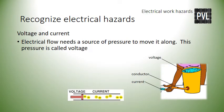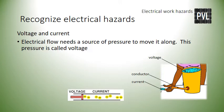Voltage and current: electrical flow needs a source of pressure to move it along — this pressure is called voltage. Think of voltage as a bucket full of water. Electrical flow, on the other hand, is the rate of flow of electric charge, commonly called current. Think of current as the stream of water escaping from the bucket through a pipe. In this example, if you tried to plug the pipe with your finger, you would feel the pressure exerted by the weight of the water in the bucket — this compares to electrical voltage. If you unplug the pipe and just feel the flow as water rushes past your finger, this compares to electrical current.